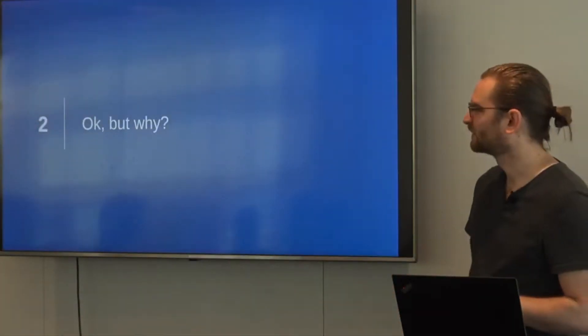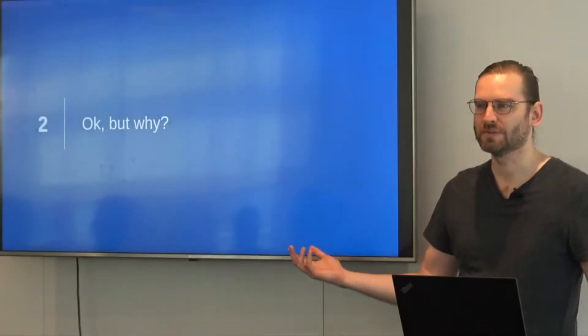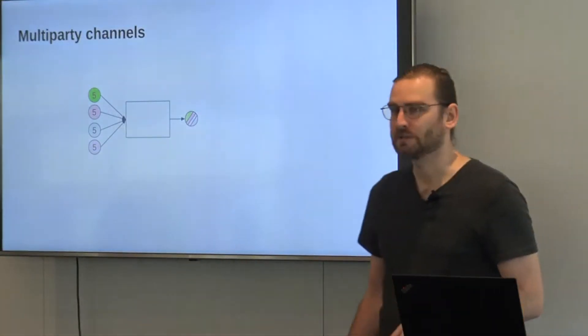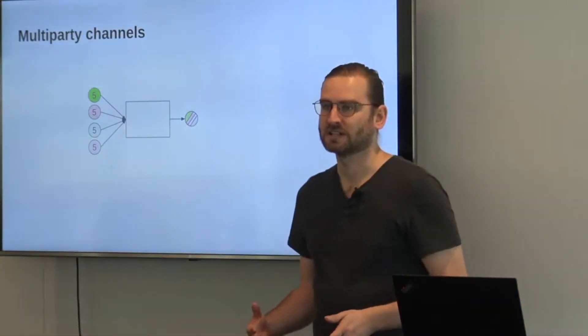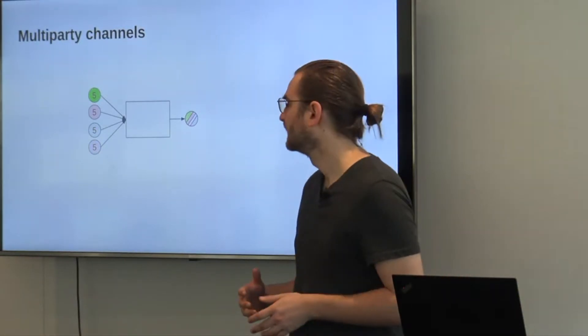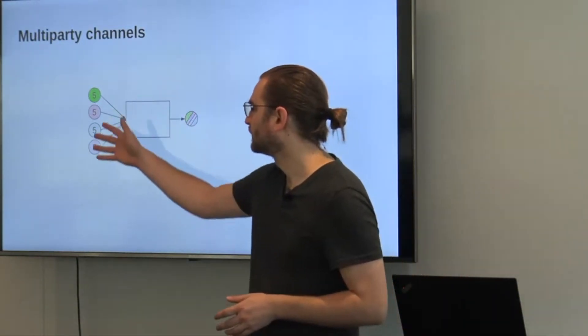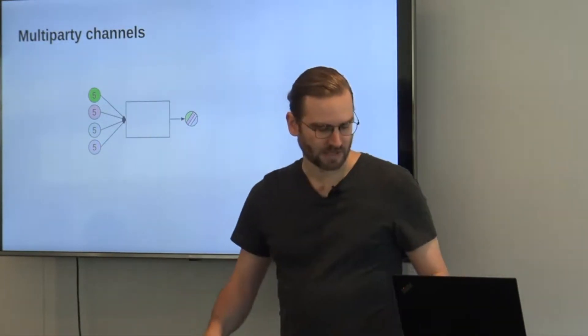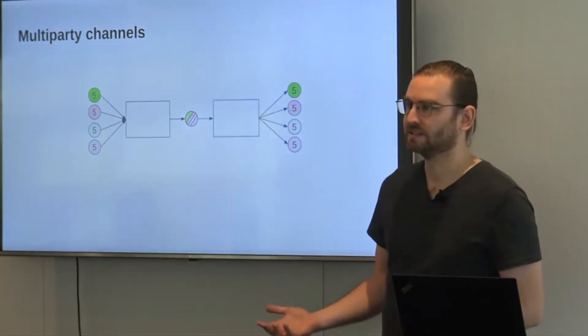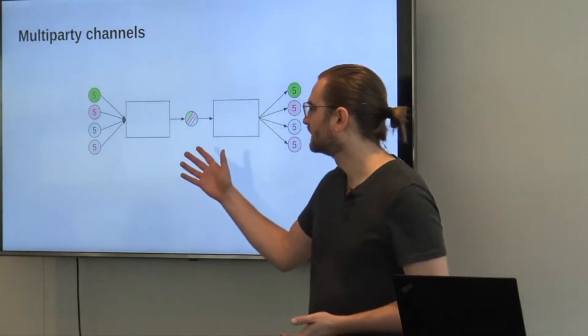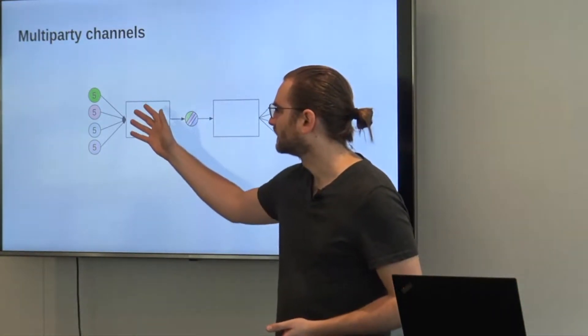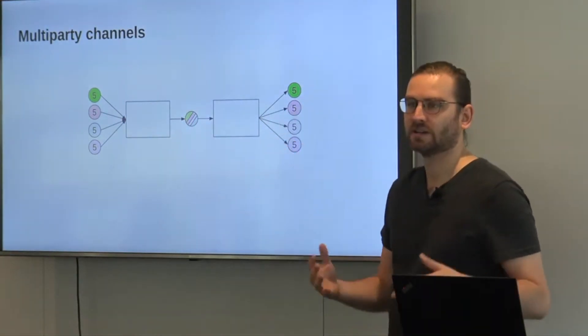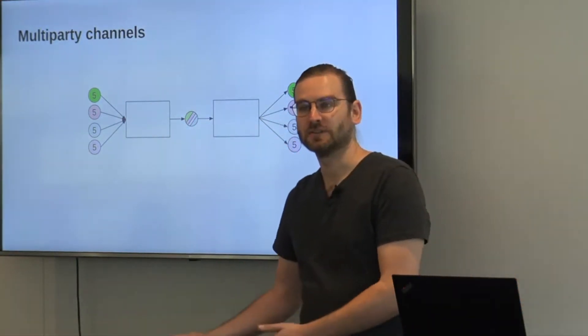So okay but why do we care about this? Well for starters you can do stuff like multi-party channels. Multi-party channels is basically a bunch of people gather, put some money into it on the table and then decide how to split it again. So the initial setup is basically that everybody puts in 5 bitcoins and we are guaranteed that we will get 5 bitcoins out at the end.